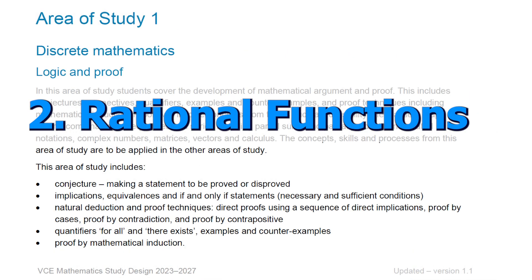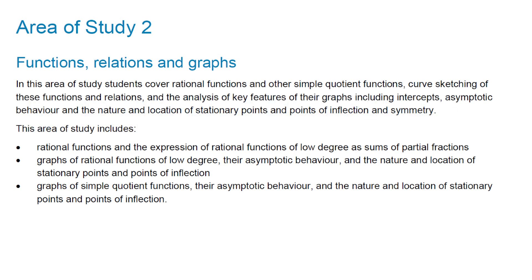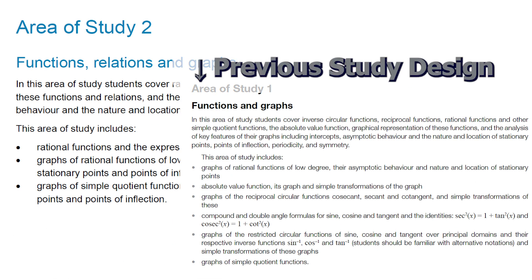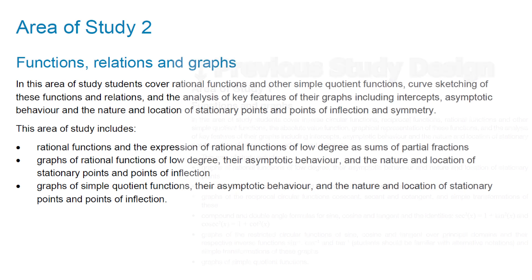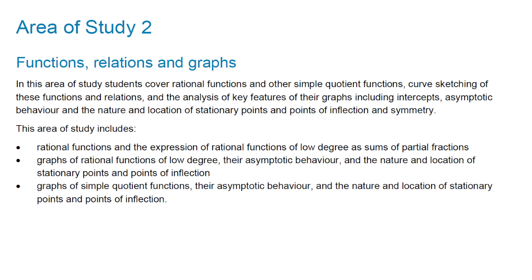Next key concept you need to know is rational functions. No, this is not new to the new study design. Its importance has been elevated by what has been removed from the old study design. In the old study design, under the functions and graphs area of study, we had absolute value functions, reciprocal circular functions, inverse circular functions. What's happened now is those have been pushed back into units one and two. So what's left in the unit three-four study design is all to do with rational functions, quotient functions and graphs of these functions. Definitely these are going to be on your exam. You're probably going to have to sketch one in exam one, probably also on exam two.